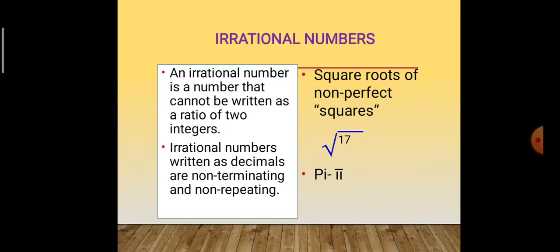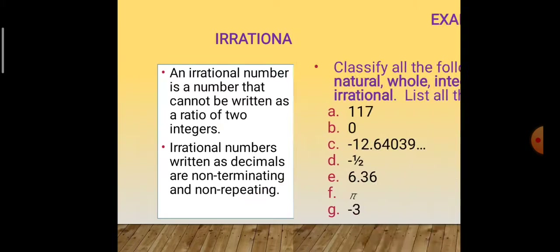I will ask you one question: is √4 rational or irrational? It is a rational number, because √4 is a perfect square. Similarly, √9 is also a perfect square, so it is also a rational number, not irrational. Irrational numbers mean square roots of non-perfect squares — like √17, √19, √21. These are all irrational numbers.